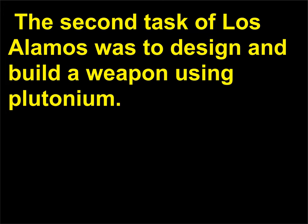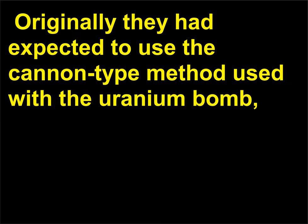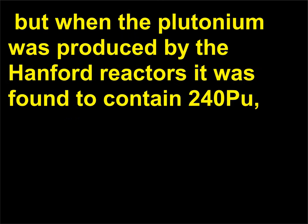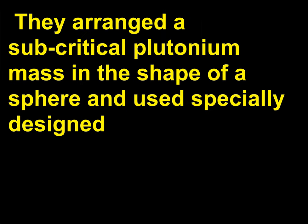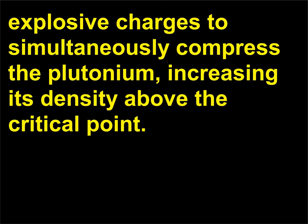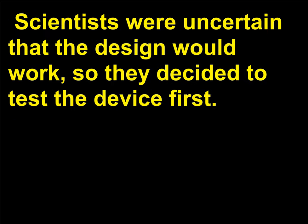The second task of Los Alamos was to design and build a weapon using plutonium. Originally they had expected to use the cannon-type method used with the uranium bomb, but when the plutonium was produced by the Hanford reactors it was found to contain ²⁴⁰Pu, and another design had to be developed. They arranged a subcritical plutonium mass in the shape of a sphere and used specially designed explosive charges to simultaneously compress the plutonium, increasing its density above the critical point. Scientists were uncertain that the design would work, so they decided to test the device first.